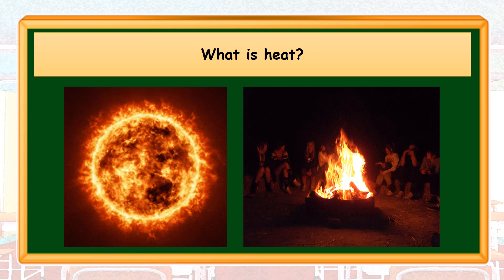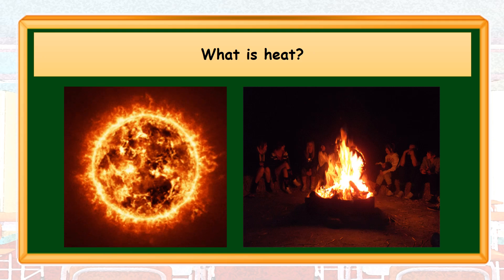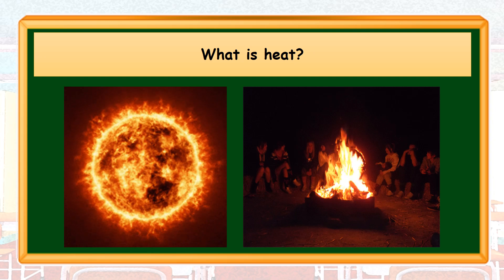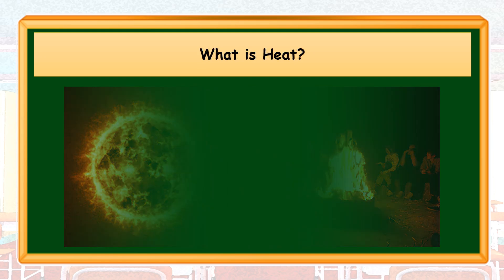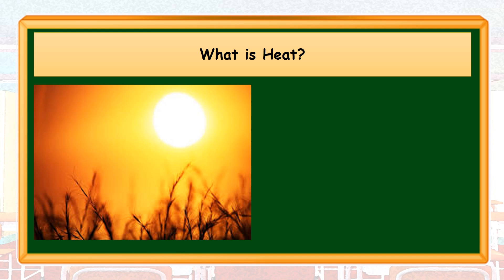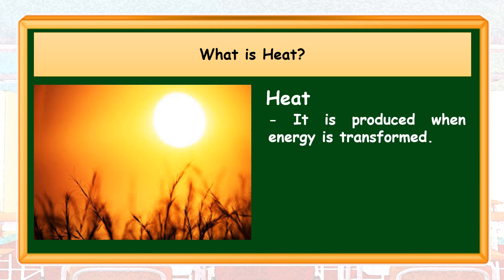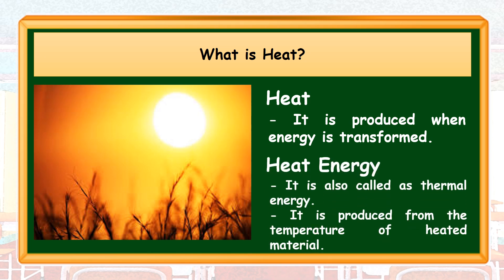Take a look at these two illustrations. What do you think they have in common? The sun and the bonfire emit heat. The sun is the basic source of heat here on our planet. It provides warmth to all living things. Our planet is livable because of heat. Heat is produced when energy is transformed. It is a type of energy that is transferred from one body to another as the result of a difference in temperature. Heat energy is also called thermal energy. It is produced from the temperature of a heated material.